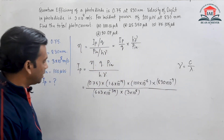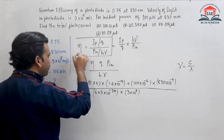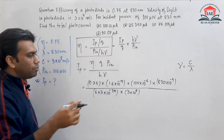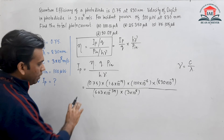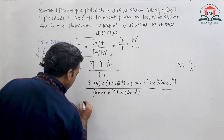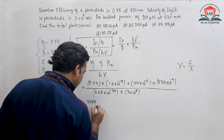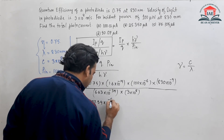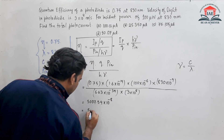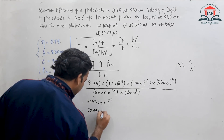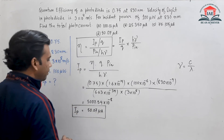This is the final equation. This is a very convenient equation needed for doing numericals on photodiodes using quantum efficiency. Calculating this in the calculator gives 5007.54×10⁻⁸, which simplifies to approximately 50.07 microampere.